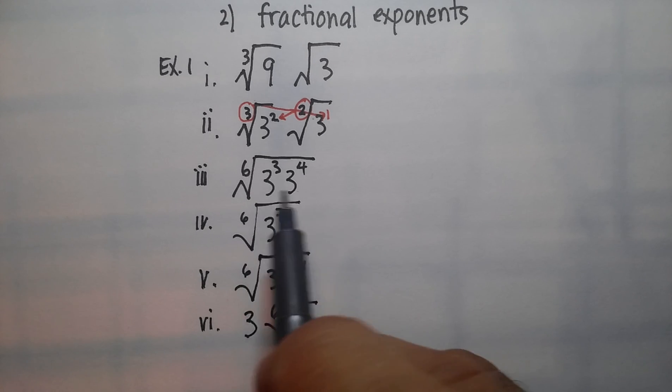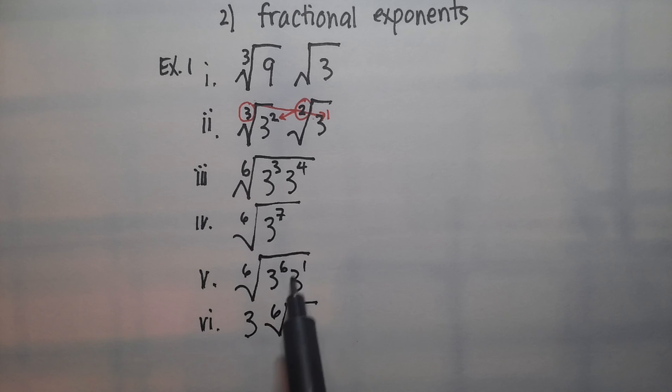Once you're at this step, whatever bases are the same, add the exponents. Then you try to match the exponent. You break this up, three to the seventh. You break it up by trying to match it with the index. So three to the sixth matches up. Three to the first is left over. You try to match it up because those are the whole numbers that go outside the radical. Whatever's left over, you keep under the radical sign.